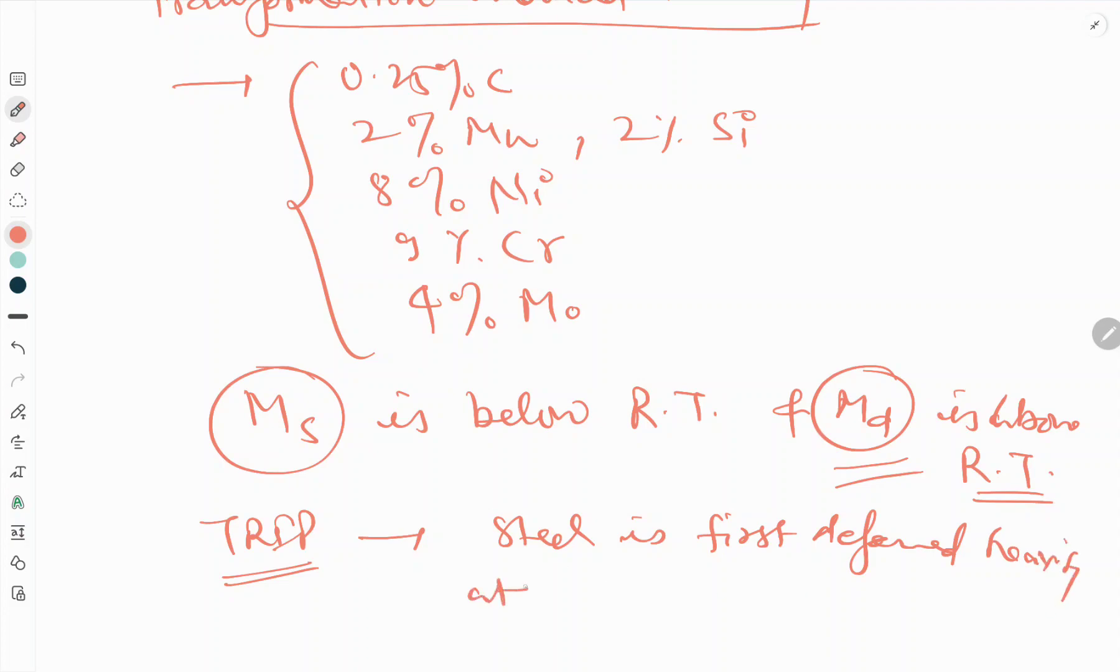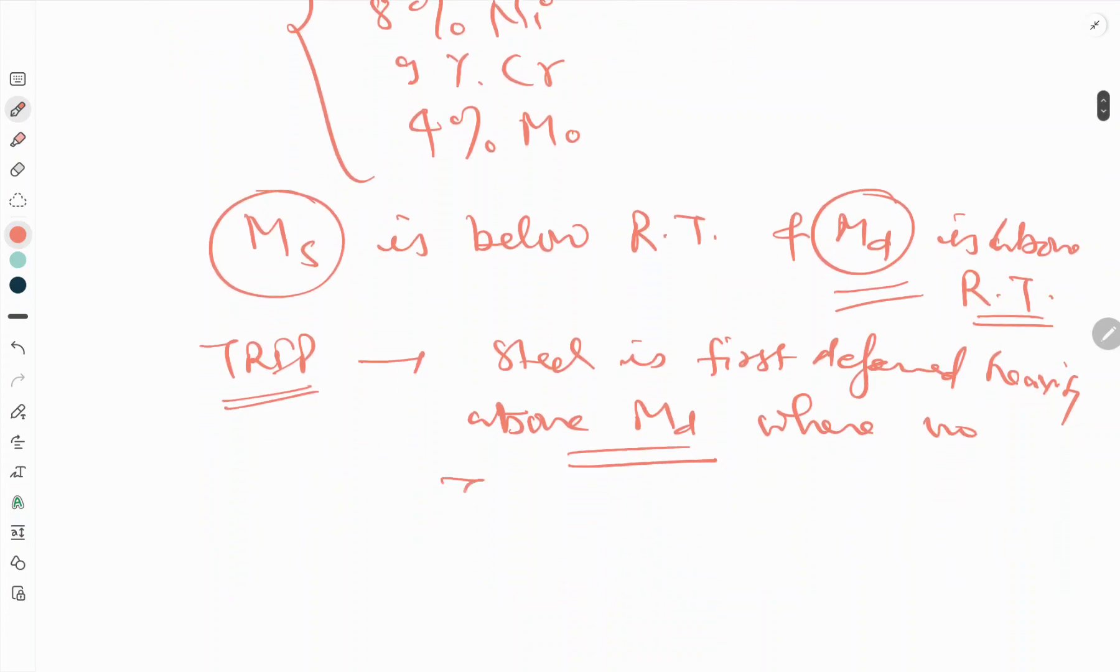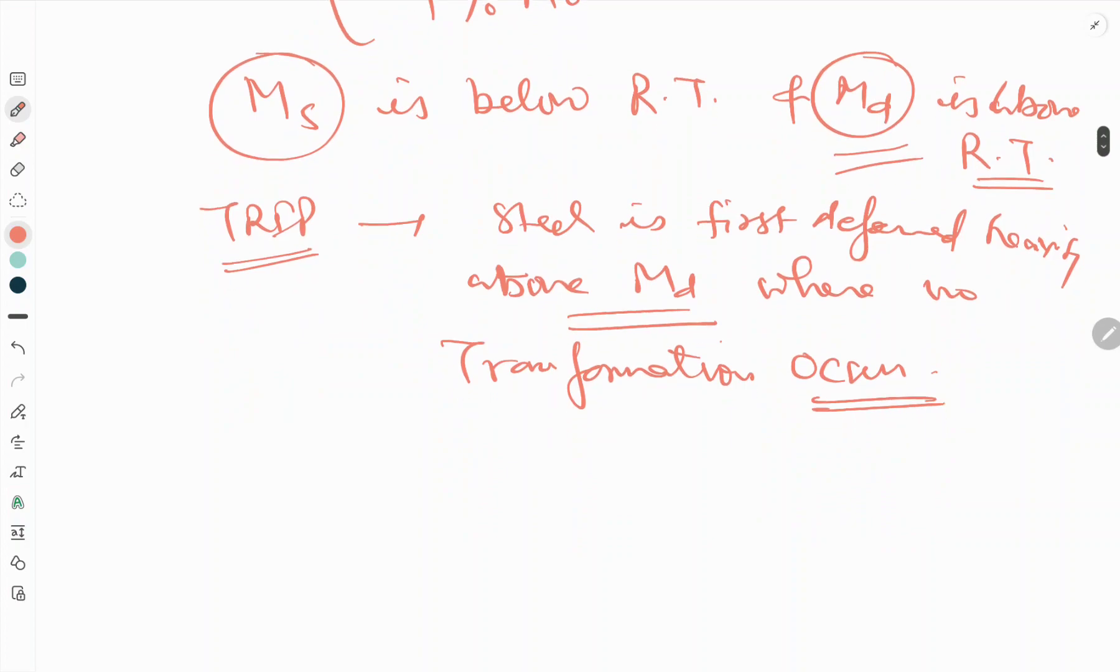Deformation occurs at or above Md where no transformation occurs. The deformation produces the right degree of metastability so that...